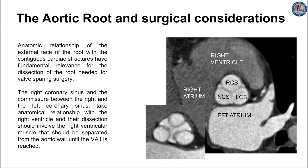Analyzing every single anatomical structure along the circumferential plane is of paramount importance when dissecting the root from its surroundings. The external wall of the right coronary sinus and the commissure between the right and left coronary sinus take close anatomical relationship with the right ventricle. The dissection should include separating the right ventricular muscles from the aortic wall until the plane of dissection reaches the inviolable external boundary line represented by the ventricular-arterial junction. At this level, the ventricular-arterial junction and the virtual basal ring are placed at different heights.